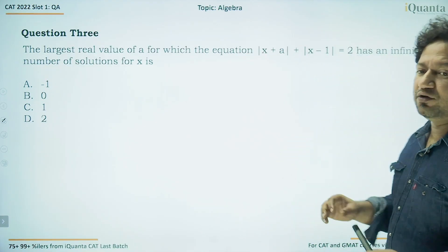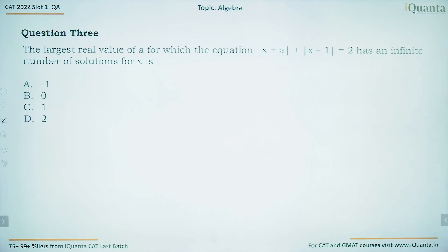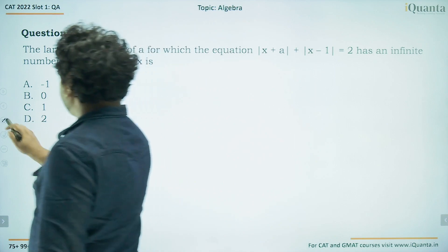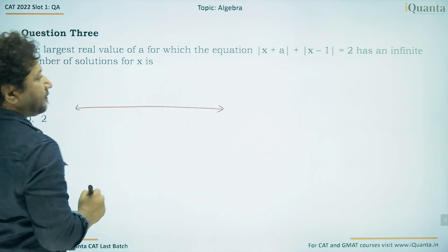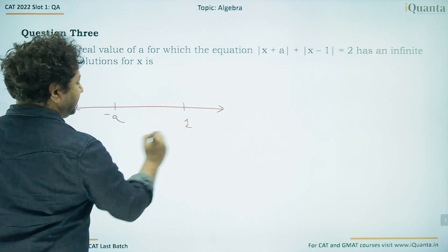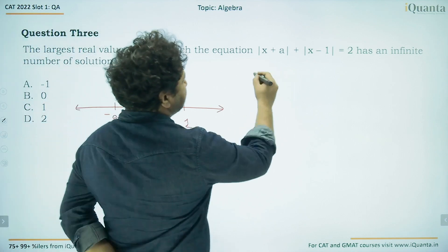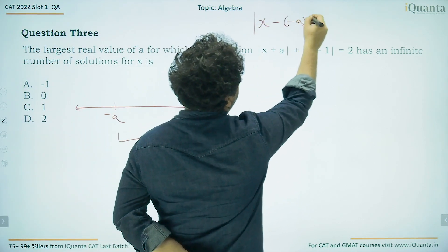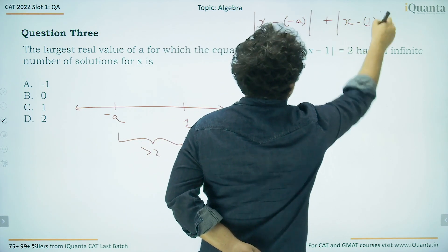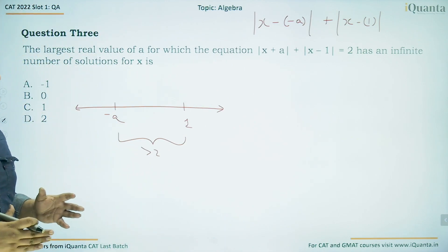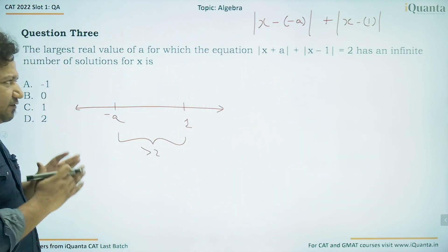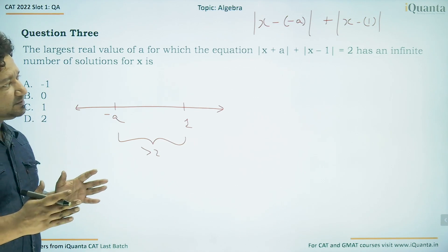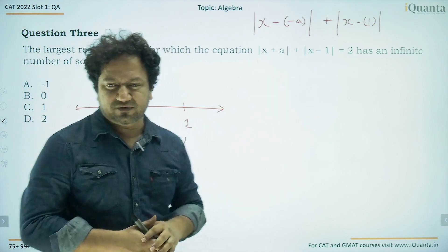Question number 3. The largest real value of a for which the equation |x + a| + |x − 1| = 2 has an infinite number of solutions for x is what? We can rewrite the equation as |x − (−a)| + |x − 1| = 2, since a modulus gives the distance of x from a given value — here from −a and from 1.